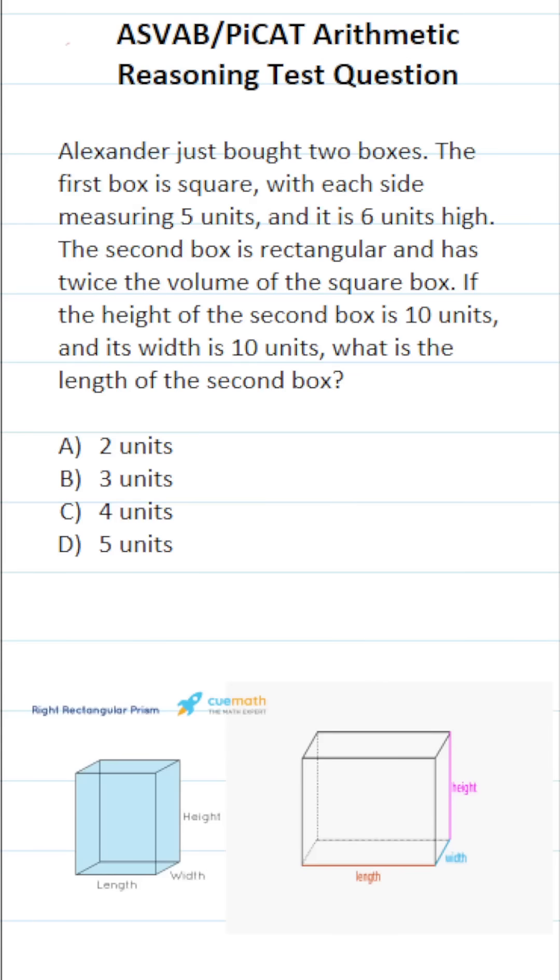This arithmetic reasoning practice test question for the ASVAB and PyCat says, Alexander just bought two boxes. The first box is square with each side measuring five units, and it is six units high.